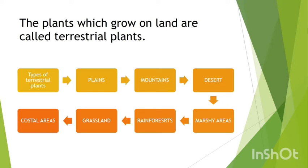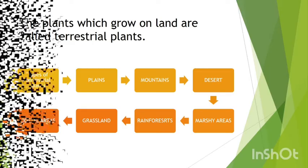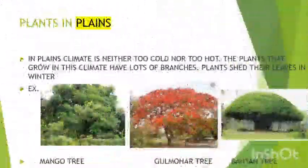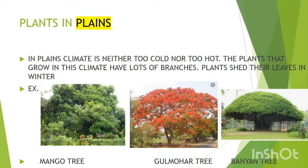There are 7 types of terrestrial plants: 1. Plains, 2. Mountains, 3. Deserts, 4. Coastal areas, 5. Grassland, 6. Rain Forests, and 7. Marshy Areas.